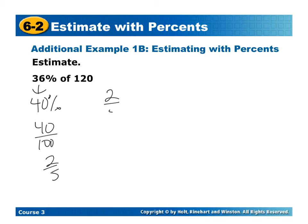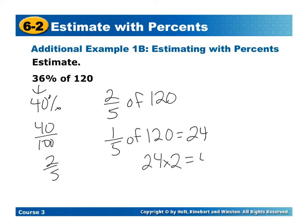So now, I'm finding 2 fifths of 120. Now, 120 is divisible by 5, and it's 24. So 1 fifth of 120 would be 24. But since I am finding 2 fifths, I have to take that, and I'm going to take the 24 and multiply it by 2 to get 48. So 36% of 120 is about 48.